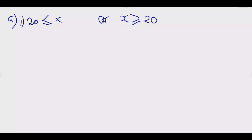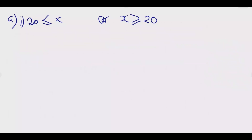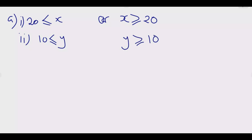The second inequality comes from the condition that type B must be at least 10, meaning the minimum value of Y is 10. Similarly, we write: 10 ≤ Y, which means Y ≥ 10. These two expressions mean the same thing.